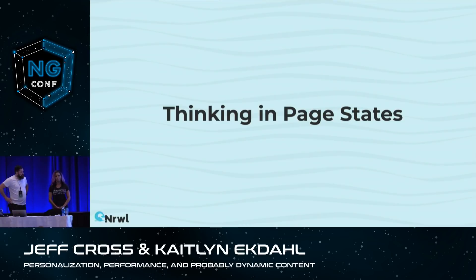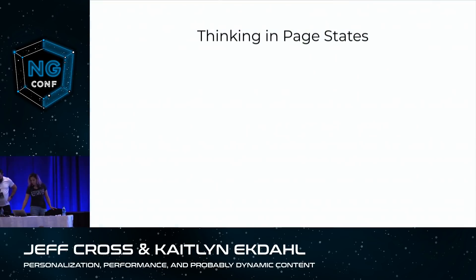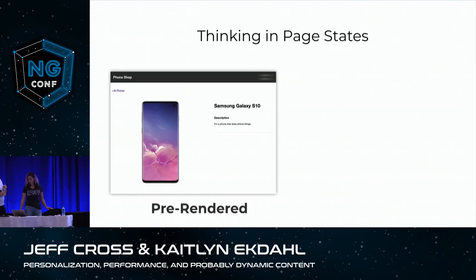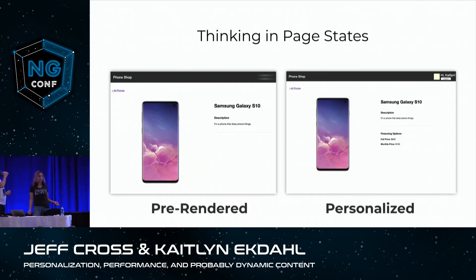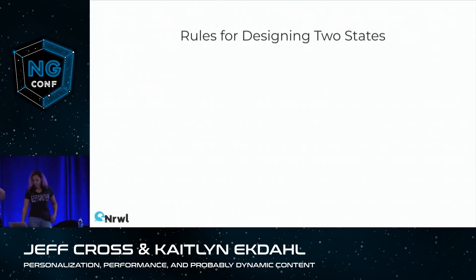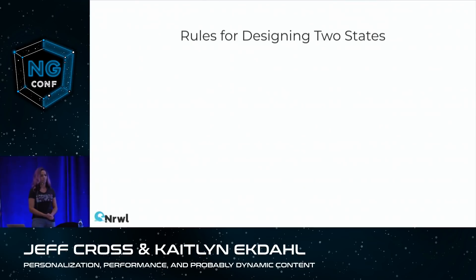Let's talk about the page states. We can think of our page as having two discrete states. We have our pre-rendered state — this is before our client loads, and it won't have any personalized content. Then we have our personalized state after the client loads, where the application is aware of the current user and we can populate that data.